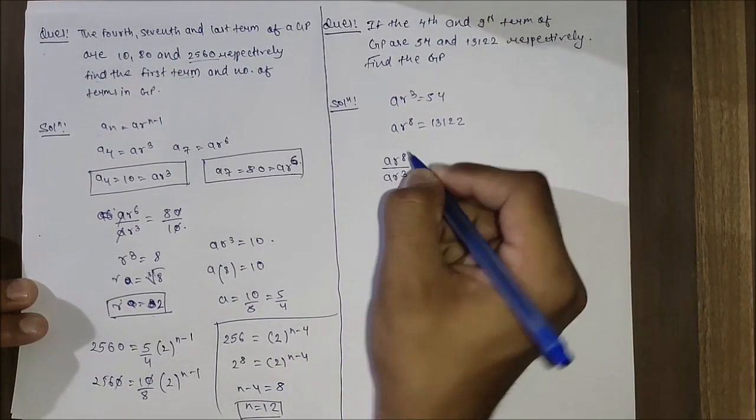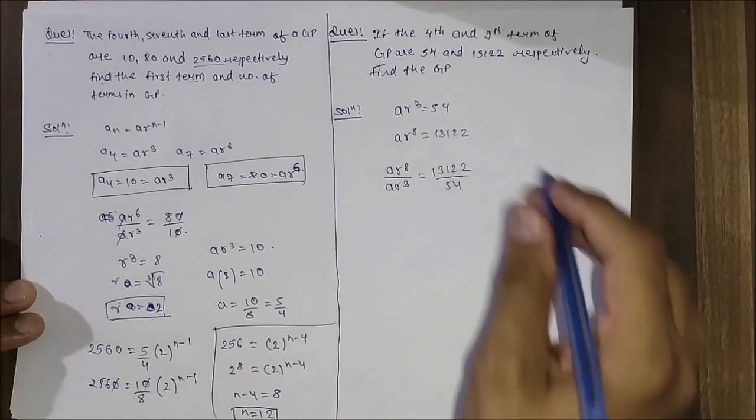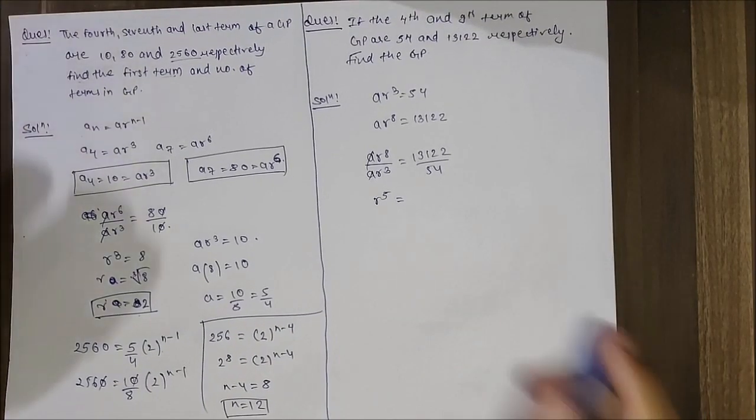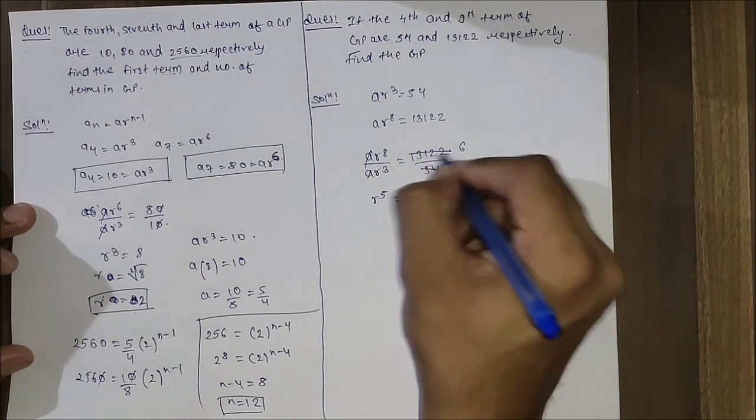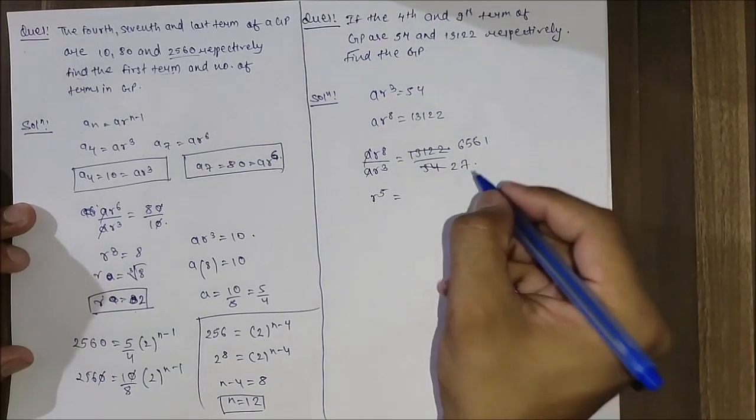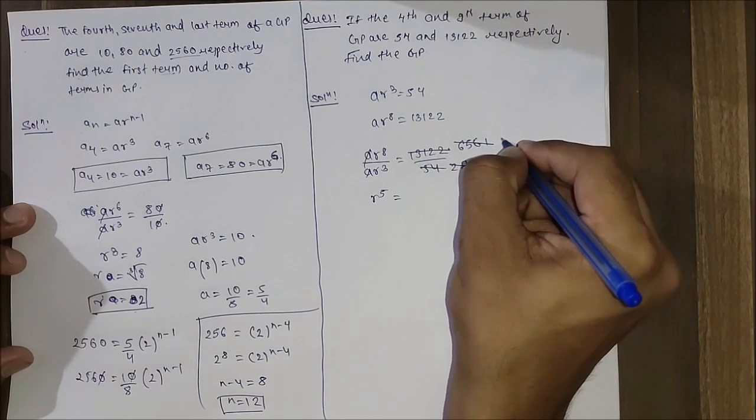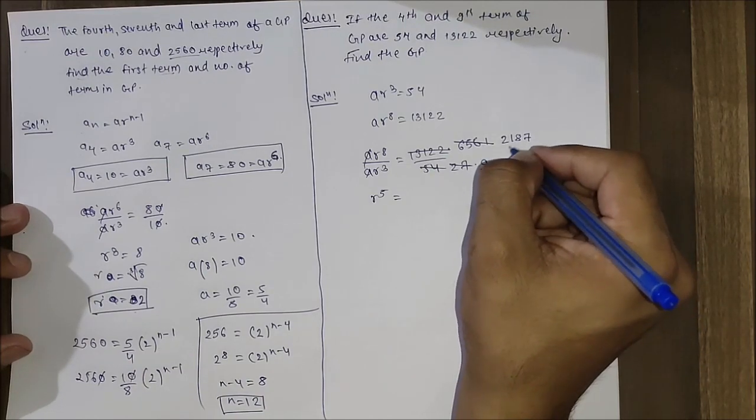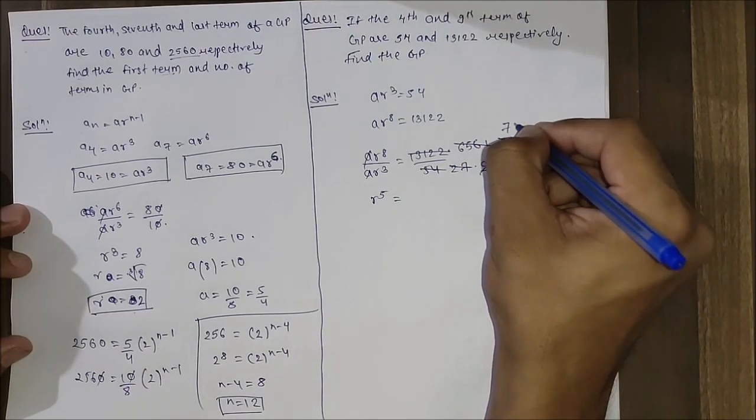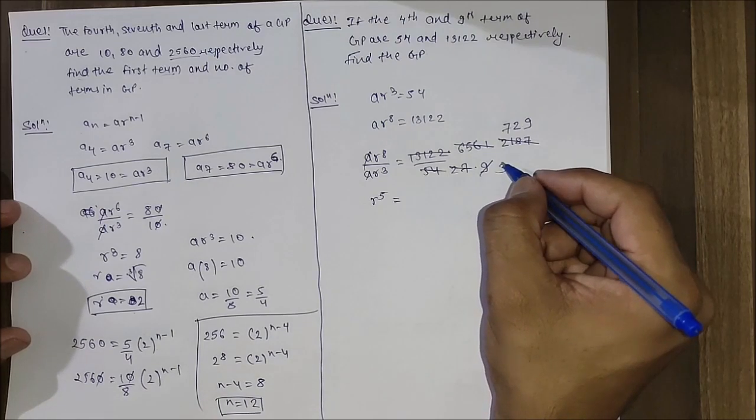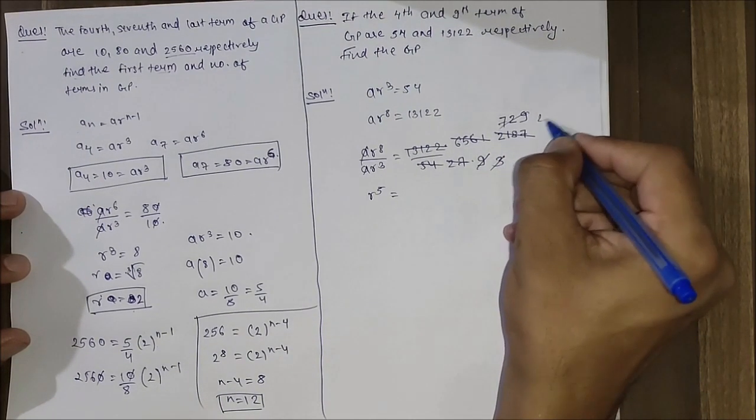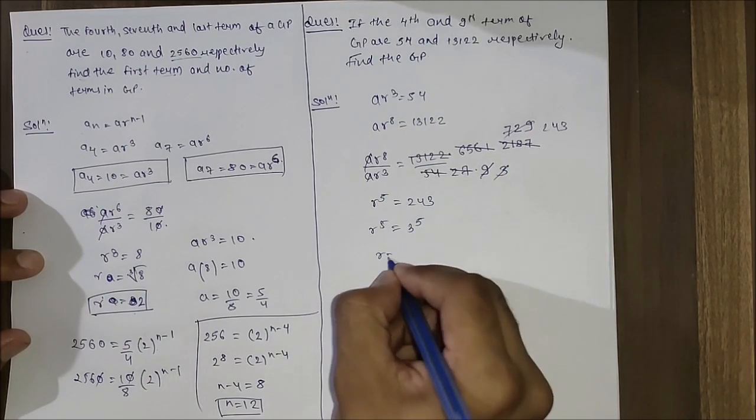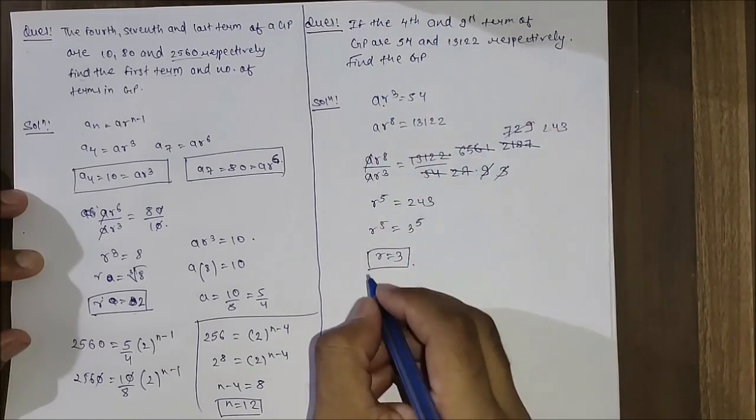ar⁸ upon ar³ equals 13122 upon 54. The a's cancel out, giving r⁵ equals... dividing 13122 by 54, we get 243. So r⁵ equals 243, which can be written as 3⁵. Therefore r equals 3.